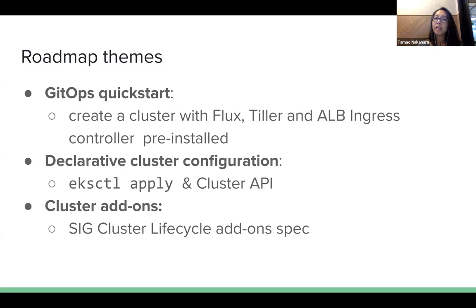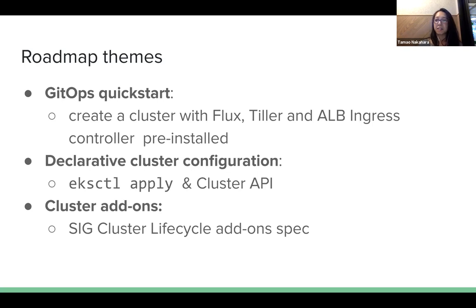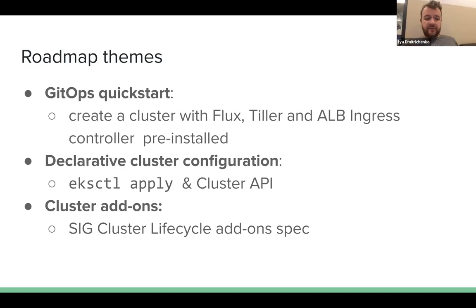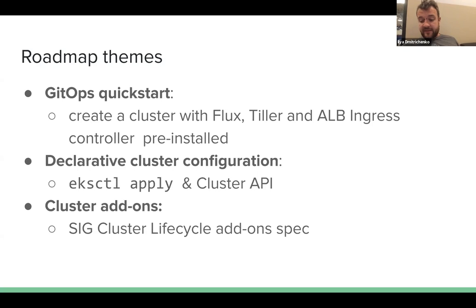A question came in: are we talking about using Flux to sync the config state of the Kubernetes cluster deployed to EKS, as opposed to using Flux to sync the config of a Kubernetes deployment? We're talking about both. GitOps quick start covers deployments, config maps, and general workload-related use. In the case of cluster API, we'd be looking to actually manage cluster configuration as well.